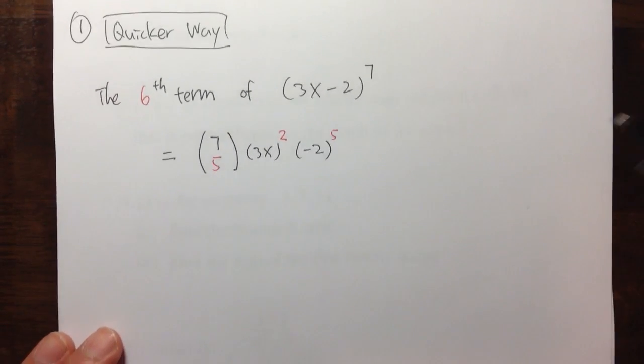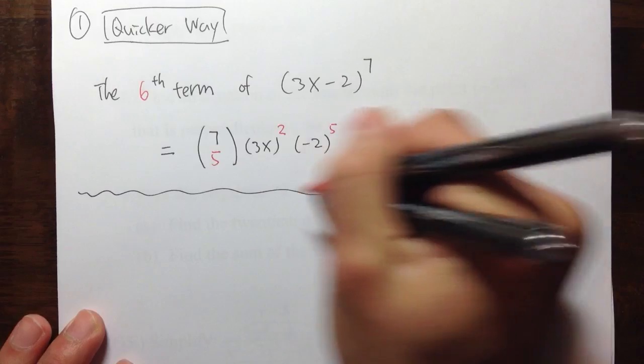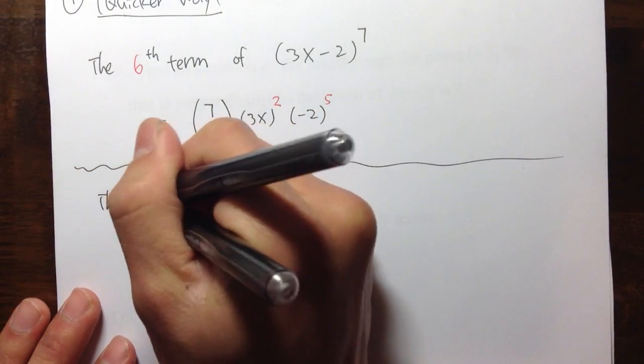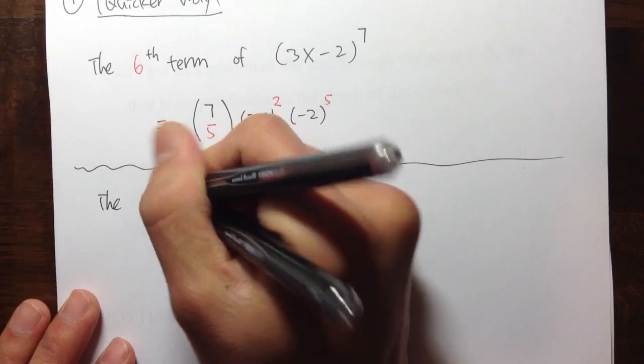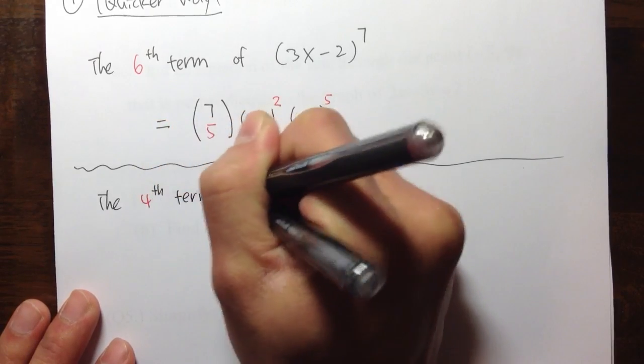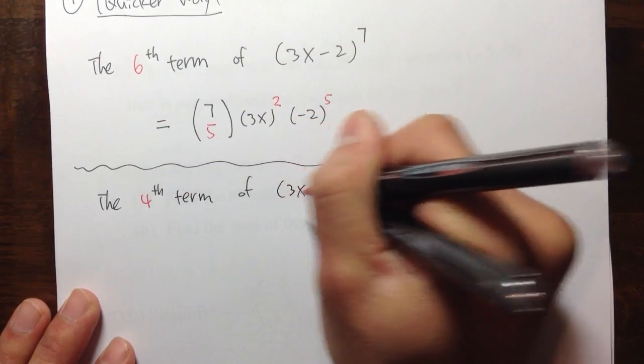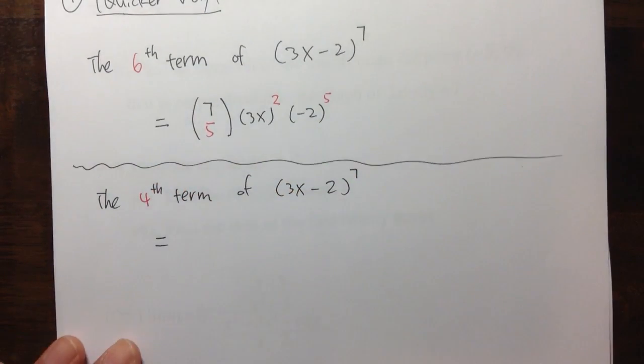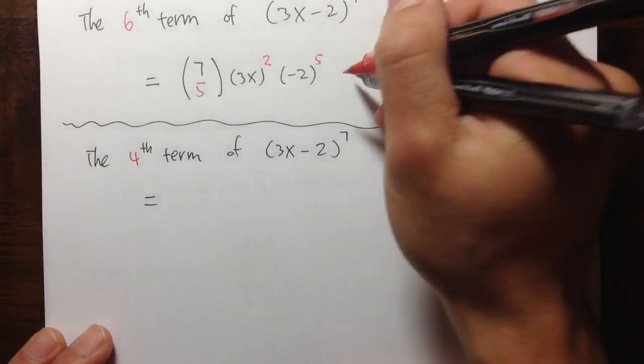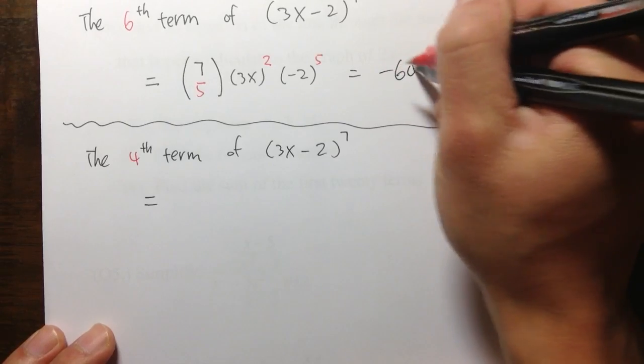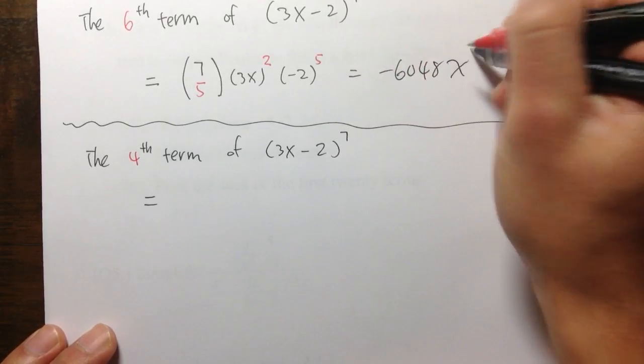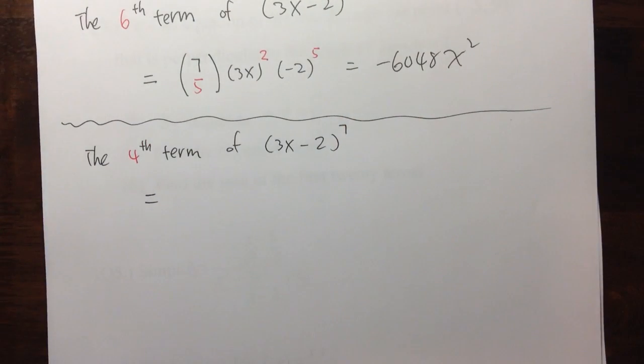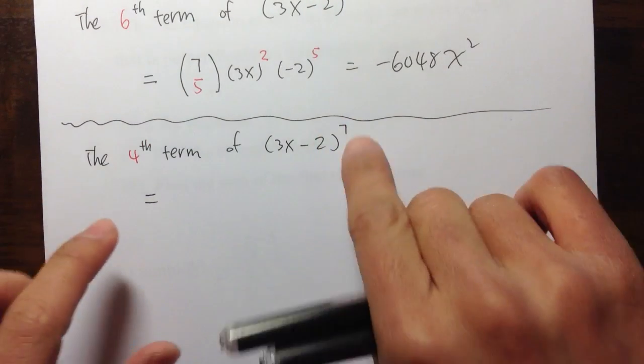So, not just for practice, I will do another example. Let's find the 4th term of exactly the same, 3x minus 2 raised to the 7. Maybe let me write down the answer right here. Negative 6,048 x squared. See previous video for this. But I want to do this right here.